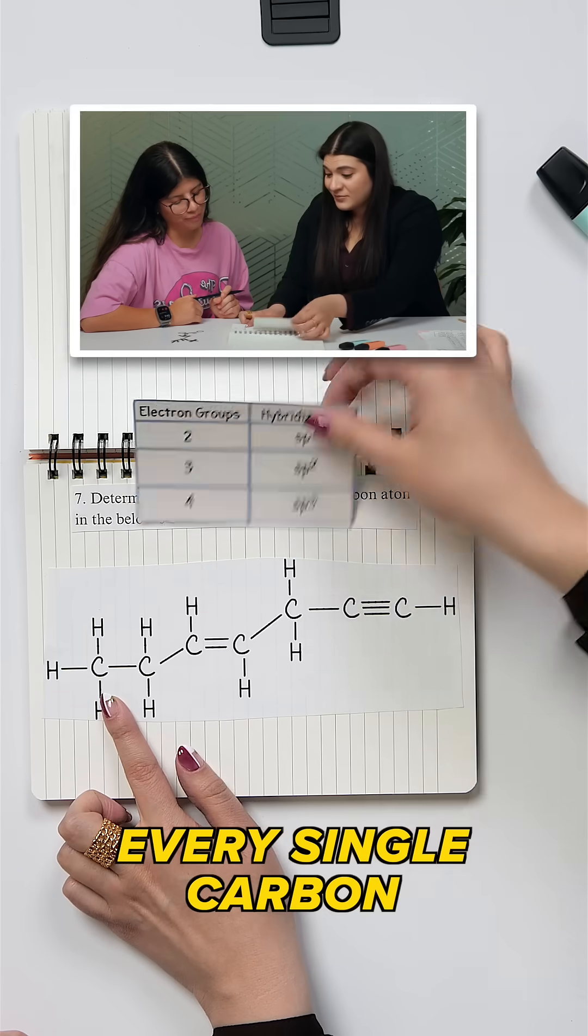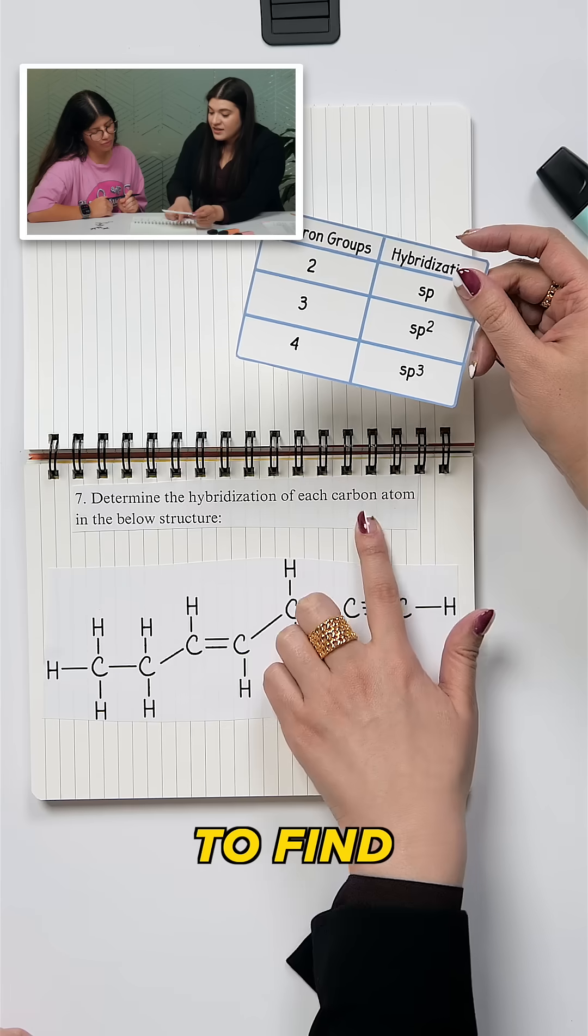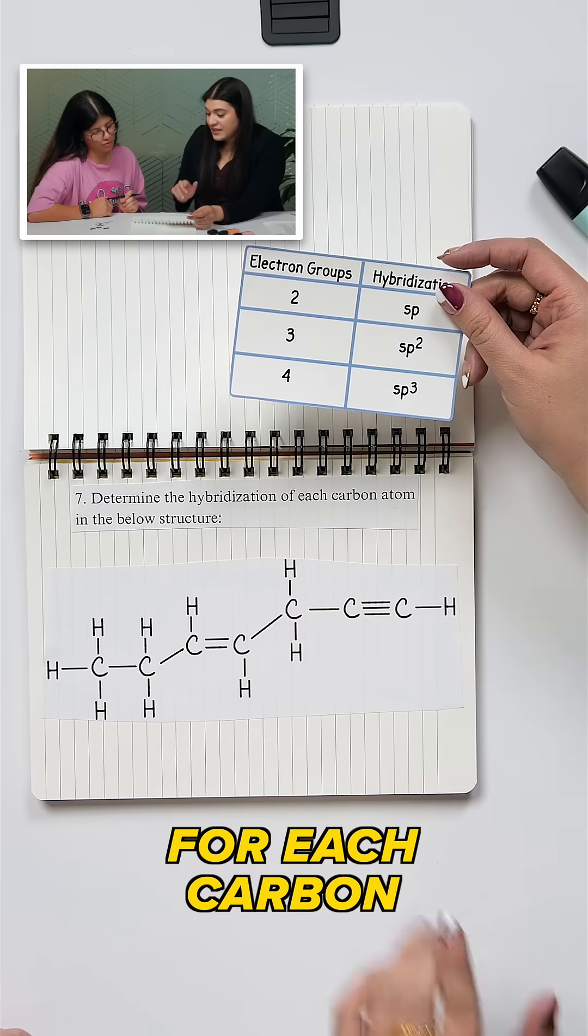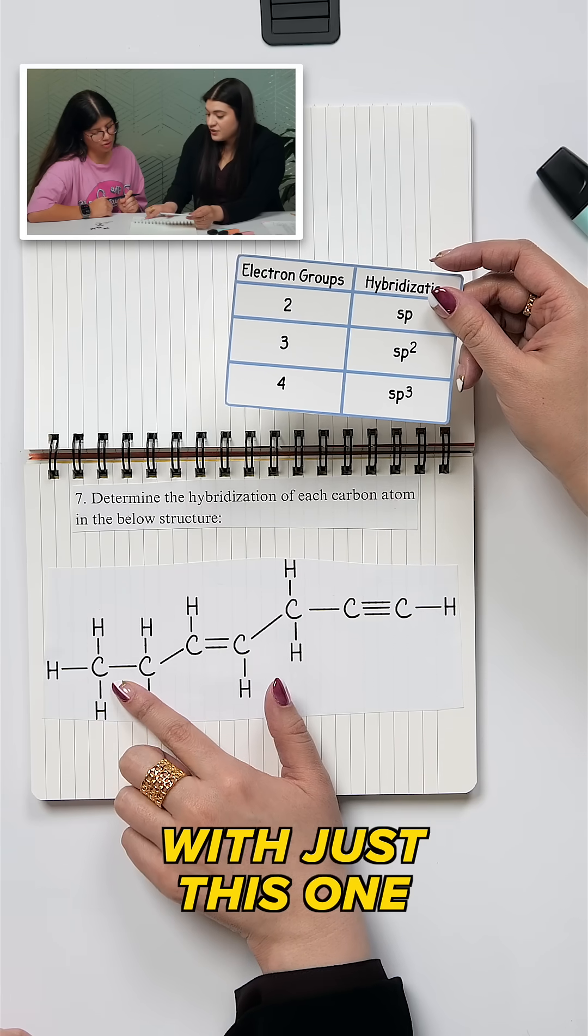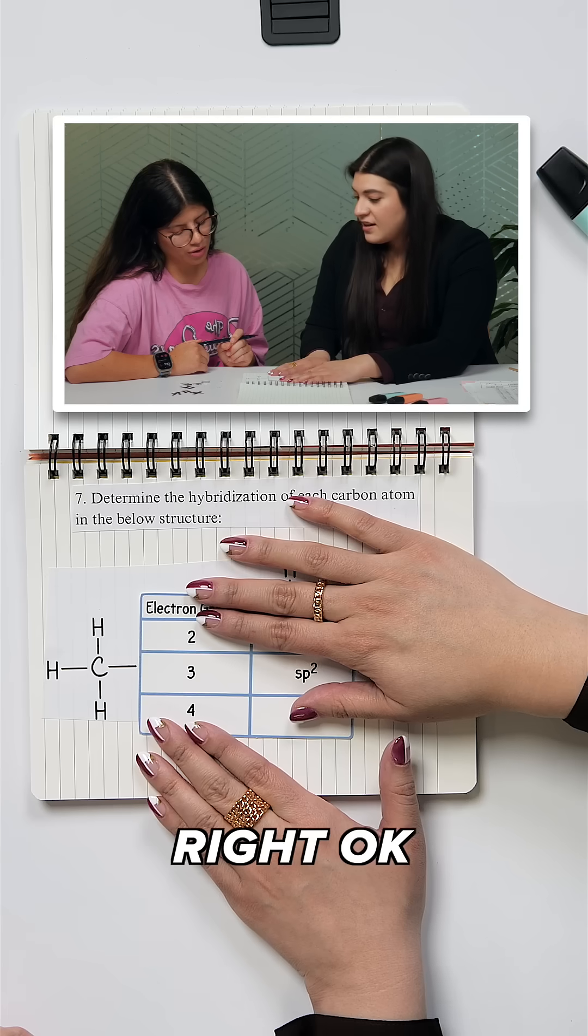We're going to look at every single carbon, right? That's what it asked us to find, the hybridization for each carbon in the structure. So let's start off with just this one. And I can kind of even just cover this, right, okay.